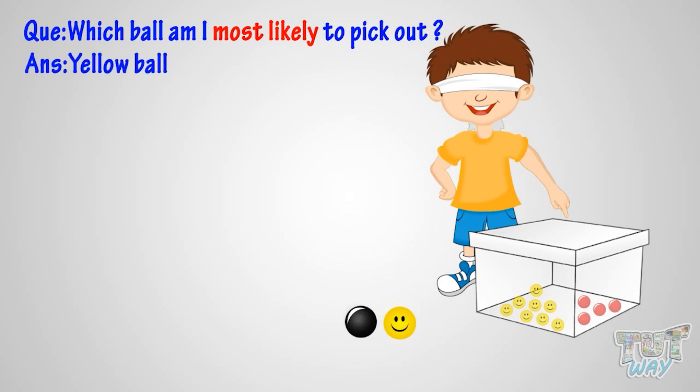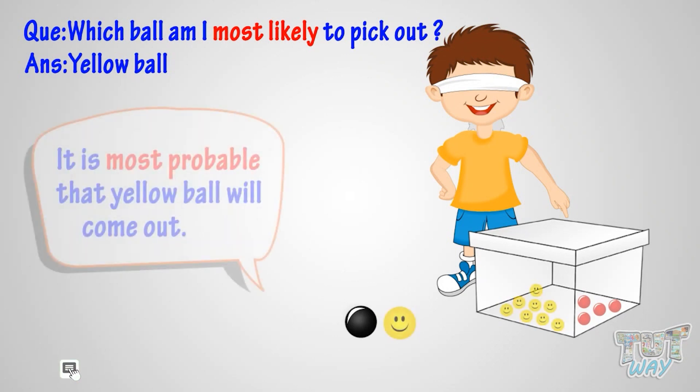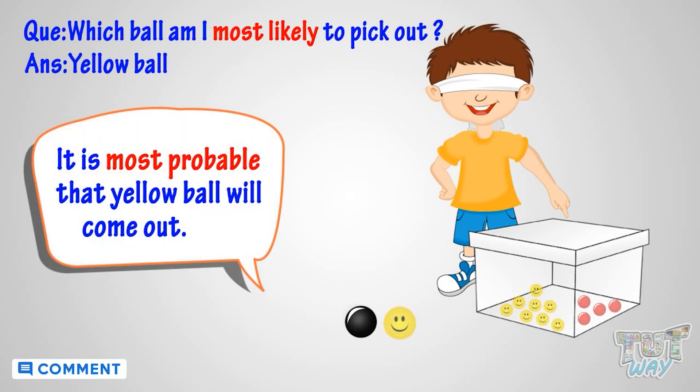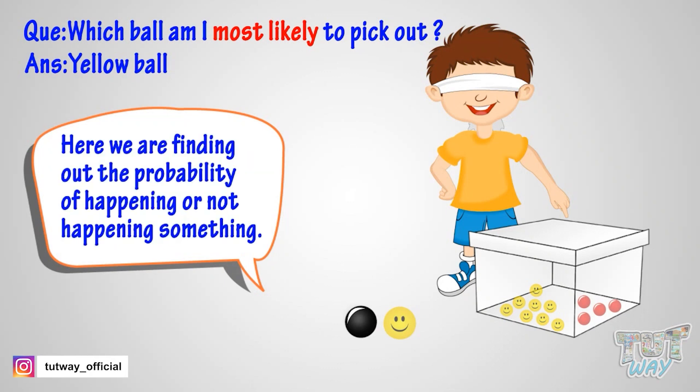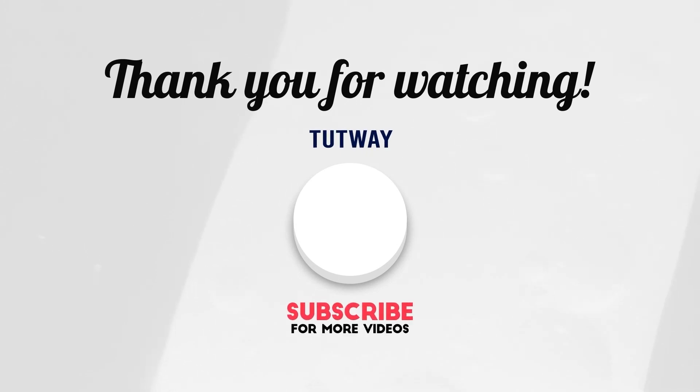Because most number of balls in the box are yellow, so it's most likely that if I pick one ball from the box it will be yellow ball, or it is most probable that yellow ball will come out. Good. So here we are finding out the probability of happening or not happening something.